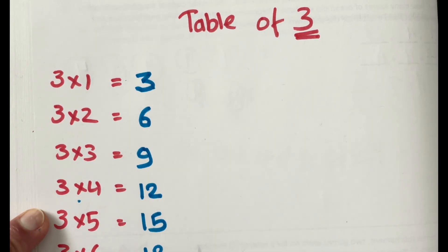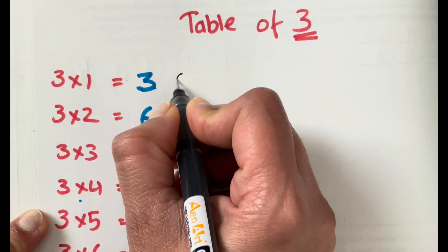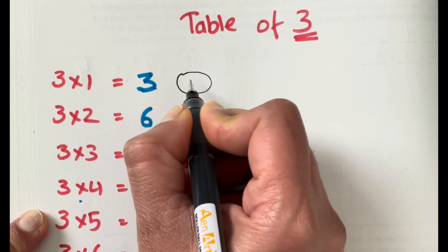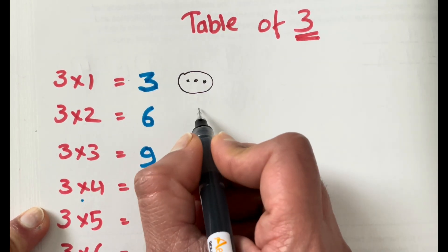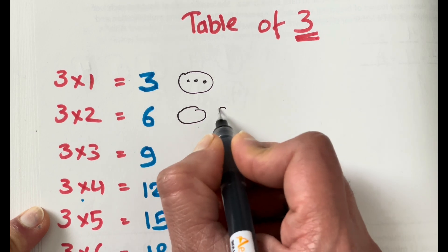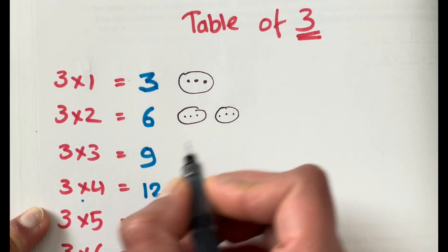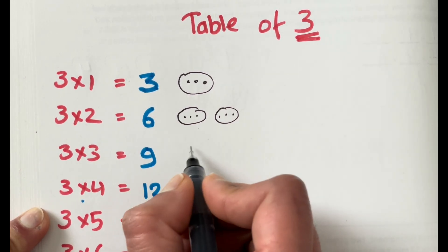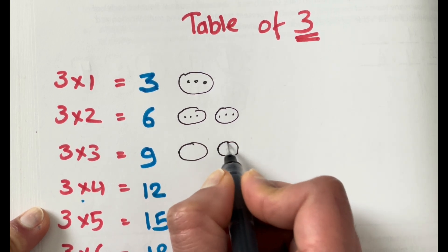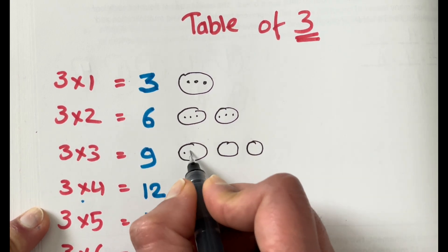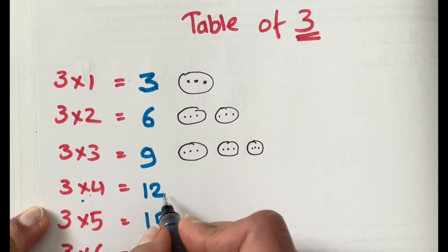Table of three. Three times one is three, that means one group of three. Three times two is six, that means two groups of three. Three times three is nine, that means three groups of three.